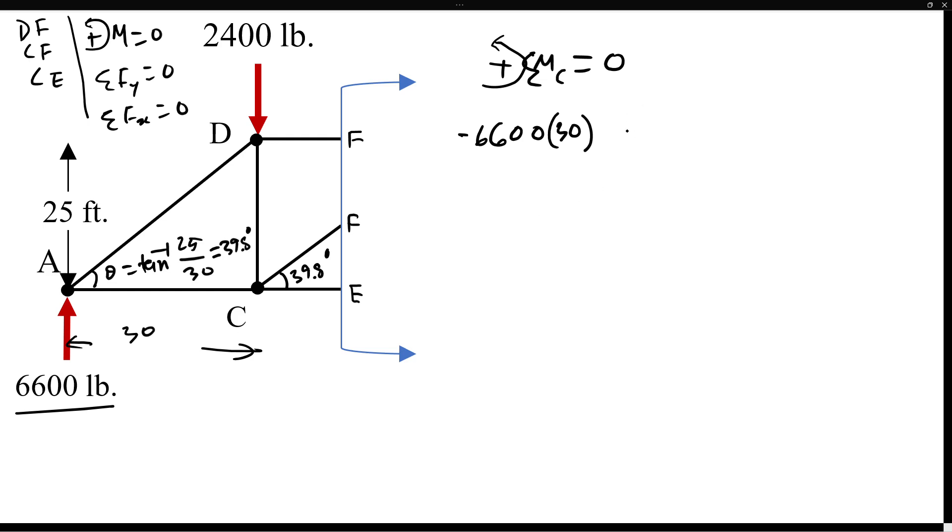The force of 2400 is passing through C, so it's not going to cause any moment. So the only thing left here is DF. We're going to assume this direction - it doesn't matter for the unknown forces, the direction you assume. However, if you know some force already, you must have the correct direction. For example, this 6600 and this 2400 must be in the direction where they are. But all the unknowns, you can assume any direction, any random direction you want.